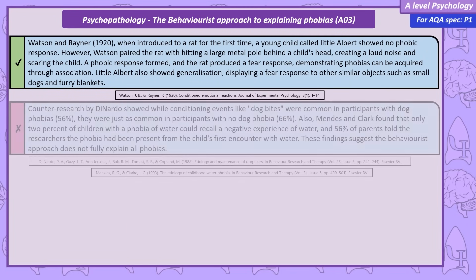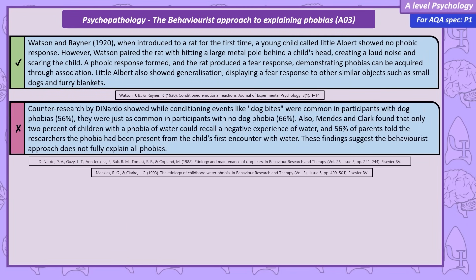There is also critical research. Dinadio showed that while conditioning events like dog bites were common in participants with dog phobias — at 56% — they were at least as common in participants with no dog phobia, at 66%. Also, when Mendes and Clark studied children with a phobia of water, they found only 2% could recall a negative experience of water, and 56% of parents reported the phobia had been present from the child's first encounter with water. These findings suggest the behaviourist approach is not a full explanation for all phobias.